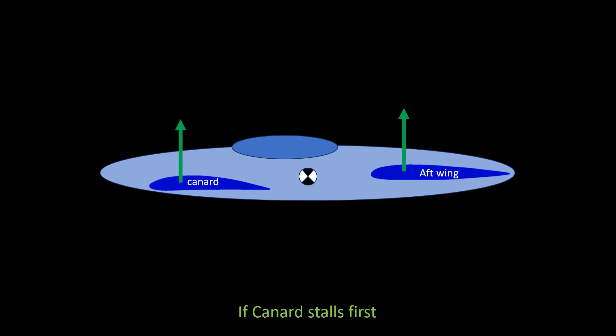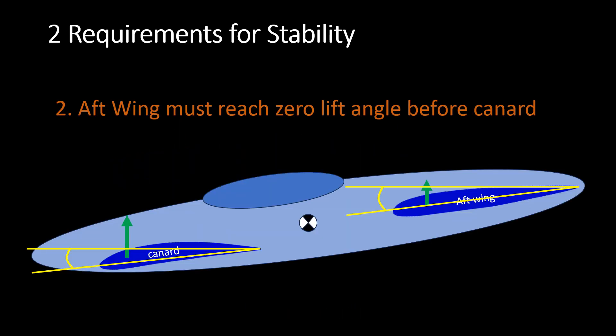The second requirement is that the aft wing airfoil must reach its angle of zero lift before the canard. For example, if the aft wing airfoil has its zero lift at -2 degrees, then the canard must have a zero lift even more negative, say at -3 degrees, for the aircraft to be stable.